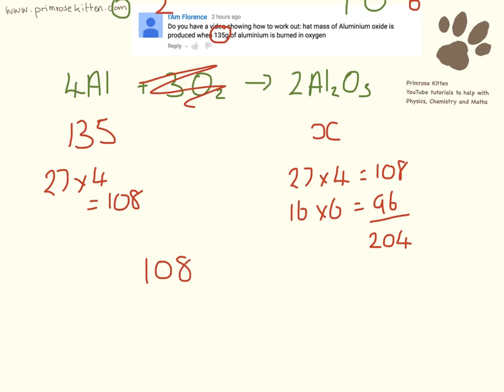Now what that tells us is if we had 108 moles of aluminium, we would make 204 moles of aluminium oxide. Now this is the really, really important bit that we actually need to answer this question. We need these two numbers and we need the number from the question and we need the bit that we need to work out. And now it is just a simple ratios question. What do we have to do to this to get to this? Then we need to do exactly the same to this to get to this.